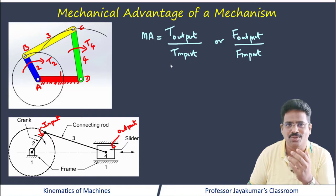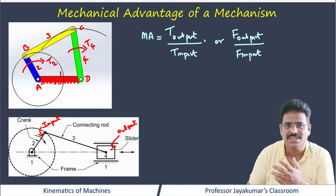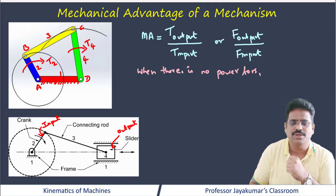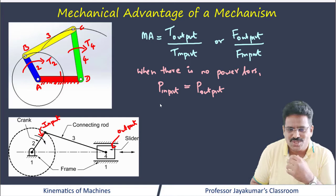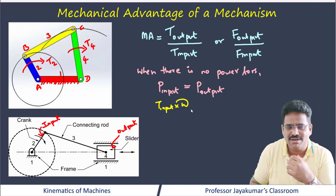When there is no power loss, input power supplied to the input link must be transmitted to the output link: P_input equals P_output. So T_input multiplied by omega of the input link equals the resisting torque of link 4 multiplied by the angular velocity of the output link.